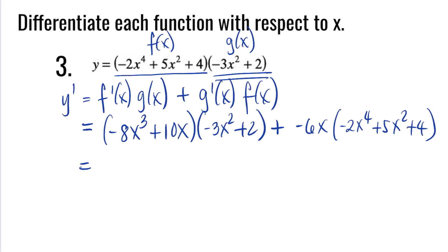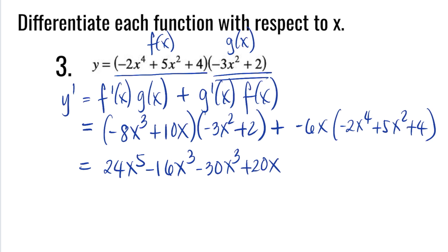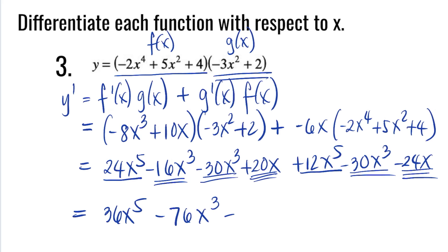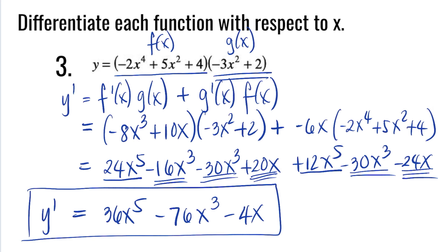Now, let's do the distributive property. Distributing negative 8x cubed: 24x to the fifth minus 16x cubed. Distributing 10x: negative 30x cubed plus 20x. Distributing negative 6x: 12x to the fifth minus 30x cubed minus 24x. Combining like terms: 24x to the fifth and 12x to the fifth give 36x to the fifth; negative 16x cubed, negative 30x cubed, and negative 30x cubed give negative 76x cubed; 20x and negative 24x give negative 4x. So the answer for number 3 is y prime equals 36x to the fifth minus 76x cubed minus 4x.